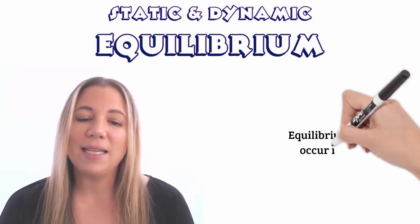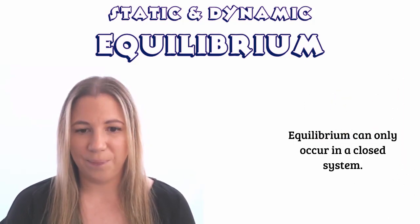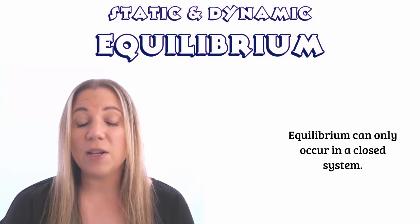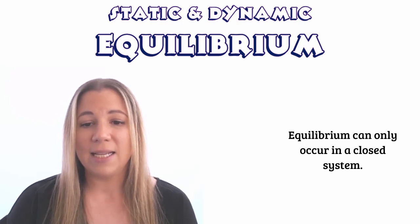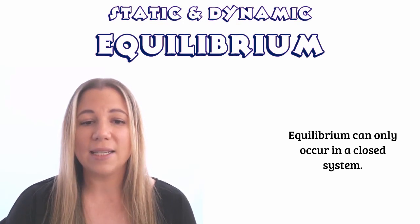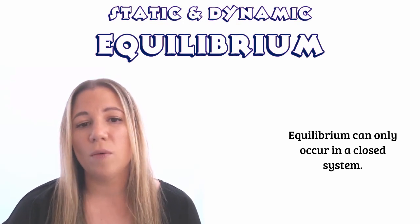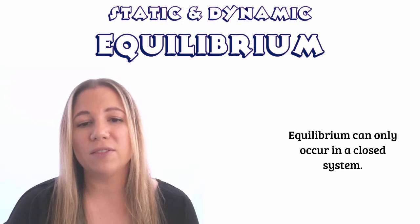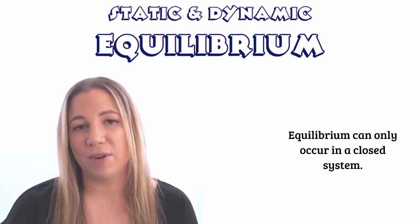Equilibrium can only be established in a closed system. This is because in an open system, some of the reactants or products might be lost, or matter might be transferred into the system and disrupt the reaction.